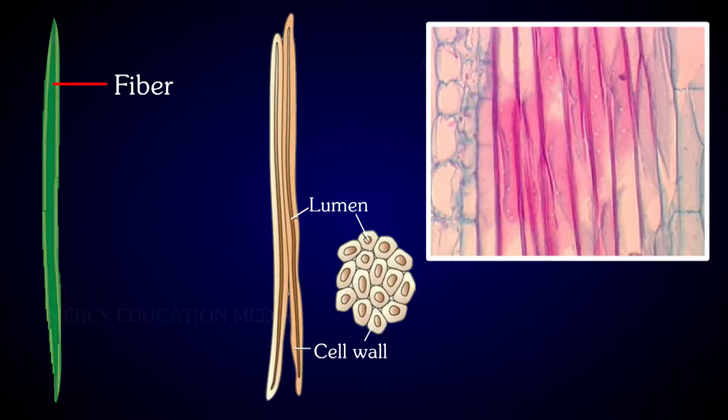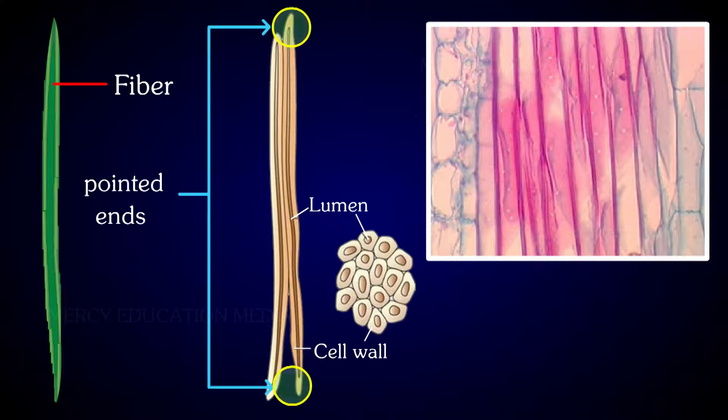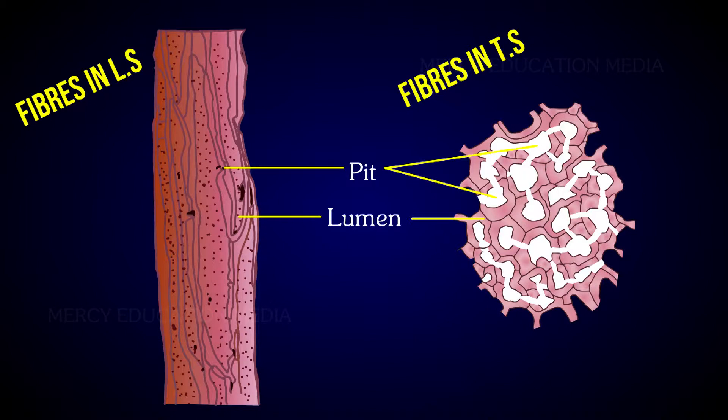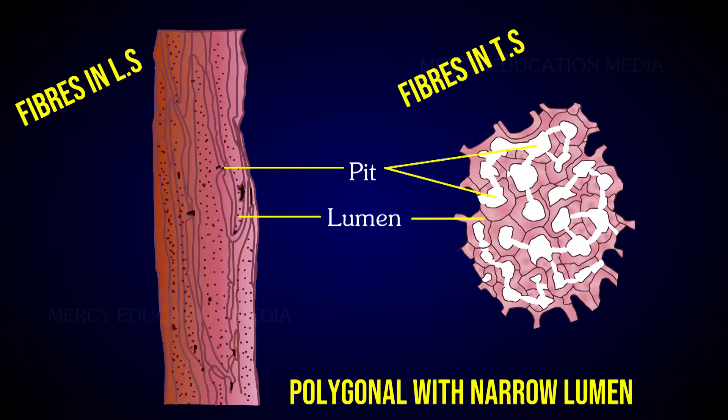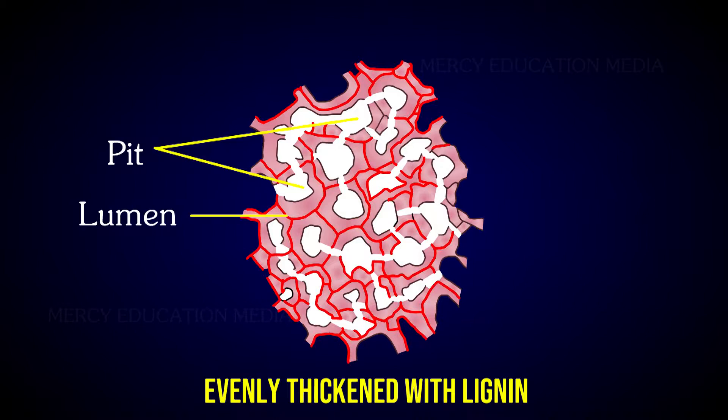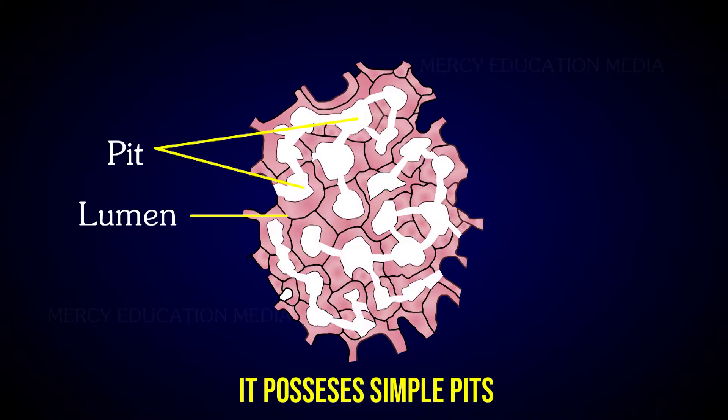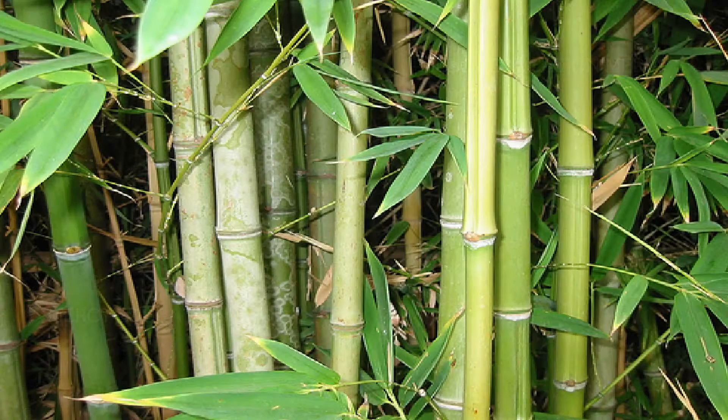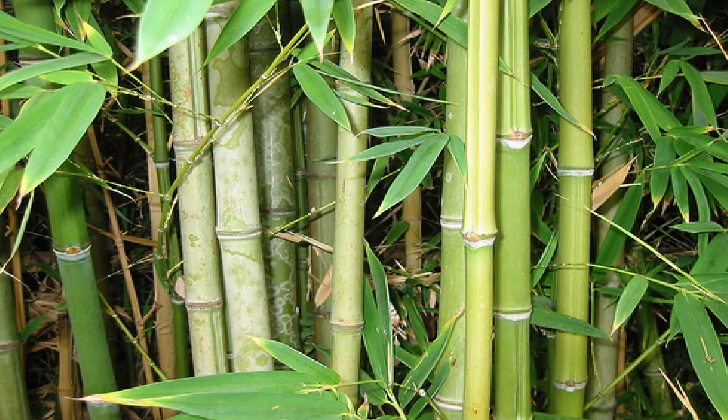Fiber cells are dead cells. They are very long and narrow with pointed ends. In transverse section, the fibers are polygonal with narrow lumen. The secondary wall is evenly thickened with lignin. It possesses simple pits. Fibers are supporting tissues. They provide mechanical strength to the plants and protect them from the strong winds.